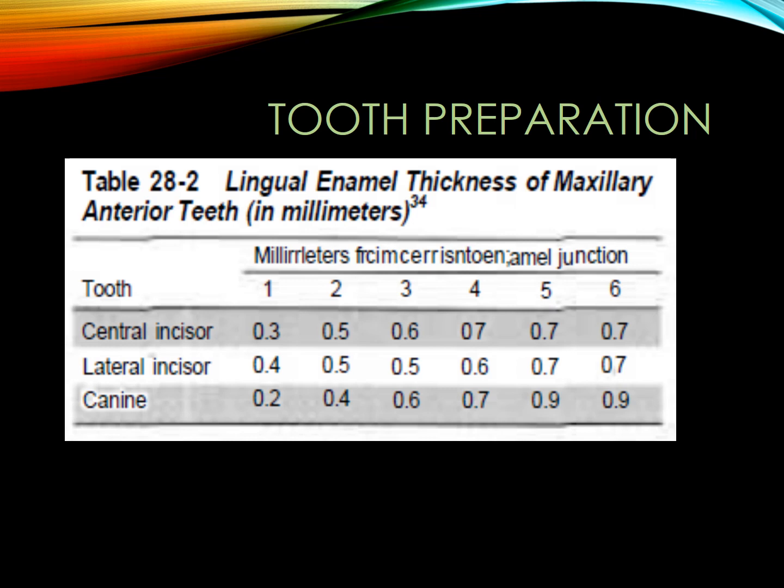Our finishing line here will be a very slight chamfer and should be 1 mm supragingival as we said before. This type should be supragingival. We need occlusal clearance; our occlusal clearance should be 0.5 mm, especially for the maxillary incisors.